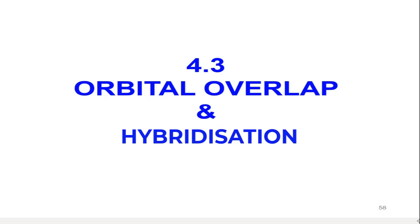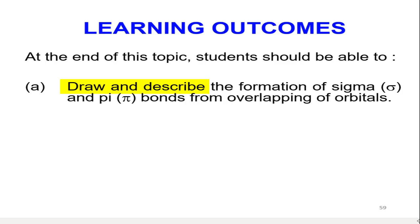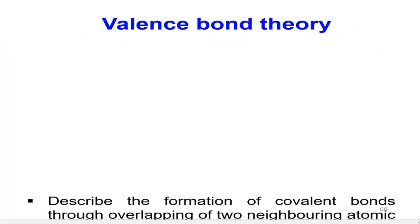Therefore, in this lesson we are going to look at a bonding theory called valence bond theory, which can answer all of these questions. At the end of this lesson you should be able to draw and describe the formation of sigma and pi bonds from overlapping of orbitals.